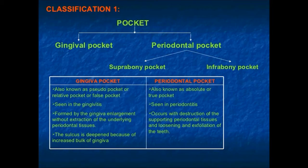The gingival pocket is a type of periodontal disease that does not cause the destruction of the underlying periodontal tissues. The sulcus deepens in a gingival pocket due to an increase in the bulk of the gingiva. Unlike the gingival pocket, the periodontal pocket — which includes the supra-bony and infra-bony pocket — is known as a true pocket and is a feature of chronic periodontitis.